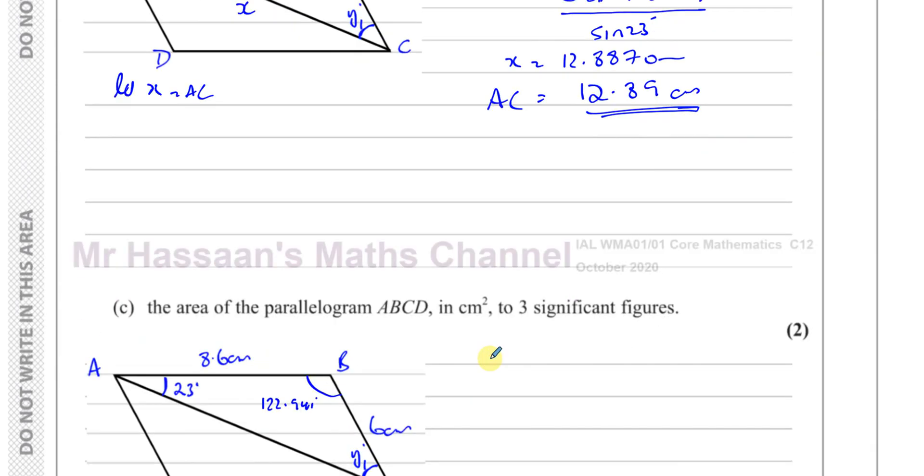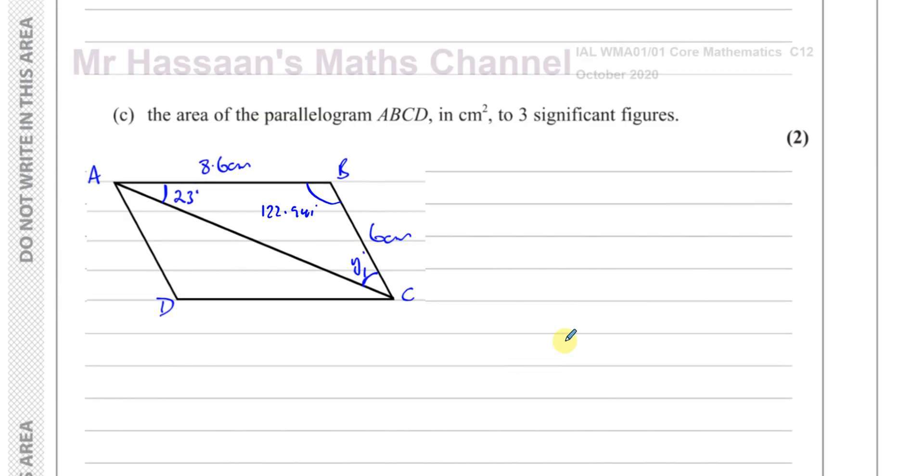Now for part C, it says find the area of the parallelogram ABCD in centimeters squared to three significant figures. Now the area of a parallelogram can be found in two ways. One way is if you have the perpendicular height, the distance between the parallel sides, and you have basically the base. So it's a base times the perpendicular height. That's the area of a parallelogram.